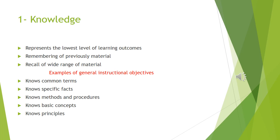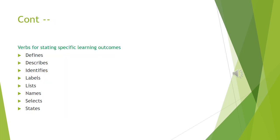Knowledge represents the lowest level of cognitive domain. It is defined as the remembering of previously learned material. This may involve the recall of a wide range of material from specific facts to complete theories. Examples of general instructional objectives include: Knows Common Terms, Knows Specific Facts, Knows Methods and Procedures, and Knows Basic Concepts. Verbs that can be used for stating specific learning outcomes at knowledge level are: Defines, Describes, Identifies, Labels, Lists, Names, Selects, and States.